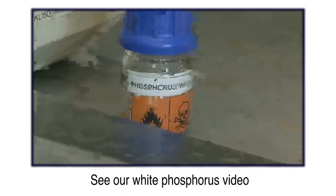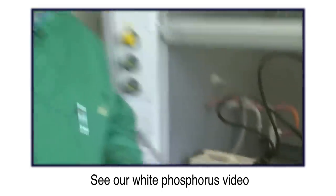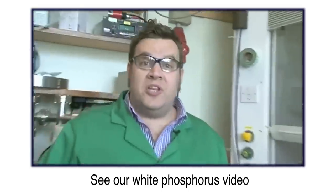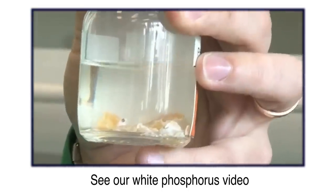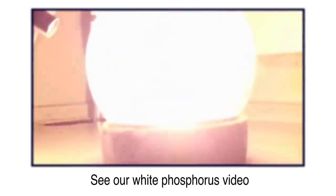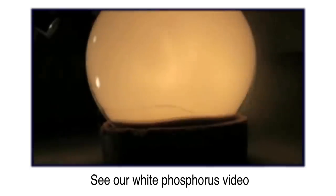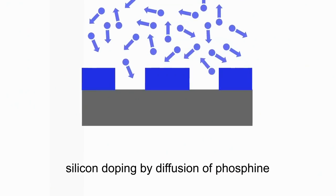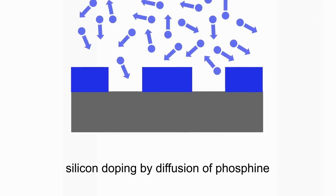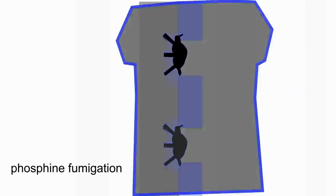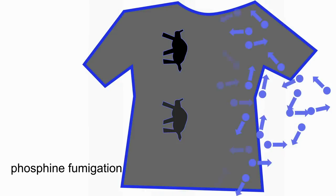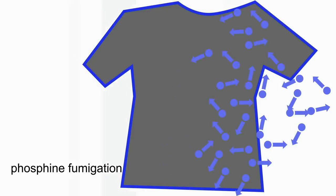Industrially, phosphine is made by reacting white phosphorus — you will have seen our video on white phosphorus — with alkali to produce phosphine. Phosphine is used industrially for two major applications: one in the electronics industry, and the other is fumigating clothes to kill parasites.